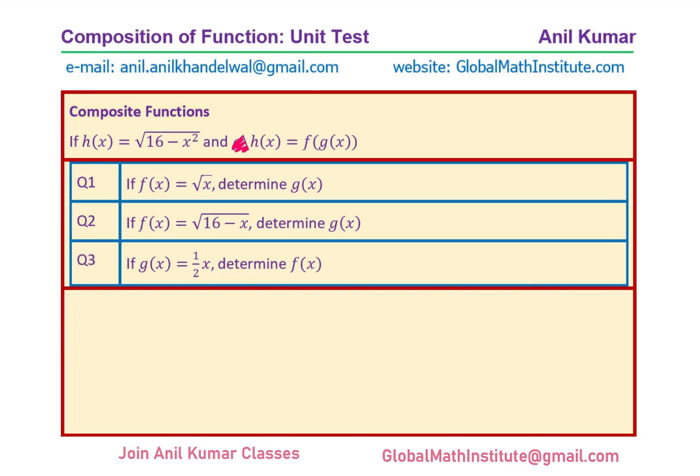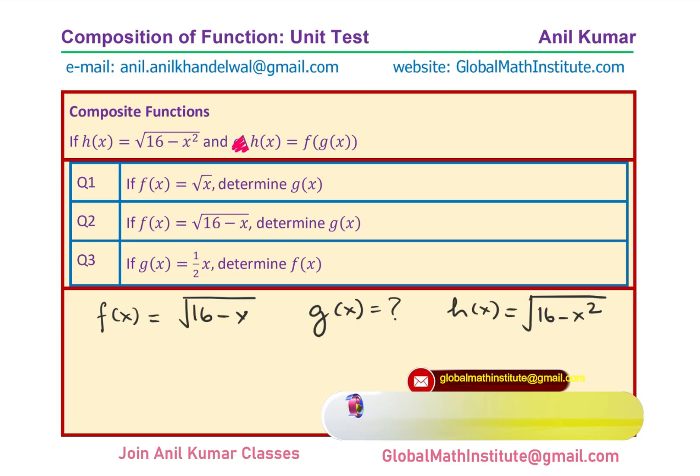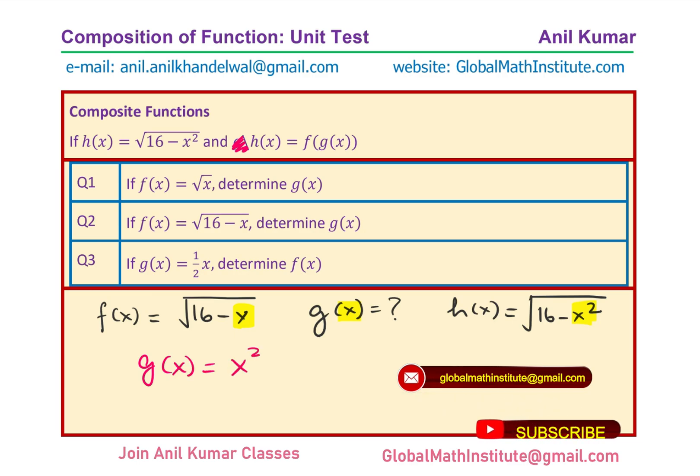Let's move on to the solution of the second question. In the second question, we are given that the function f(x) is equal to square root of 16 minus x and we need to find what is g(x) for h(x) which is equal to square root of 16 minus x square. Now, we need to again find the inside function. Finding inside function is simpler. And if you note x and x square, we can very clearly see that g(x) should be equal to x square. In that case, we will get h(x) equals to square root of 16 minus x square. Makes sense.